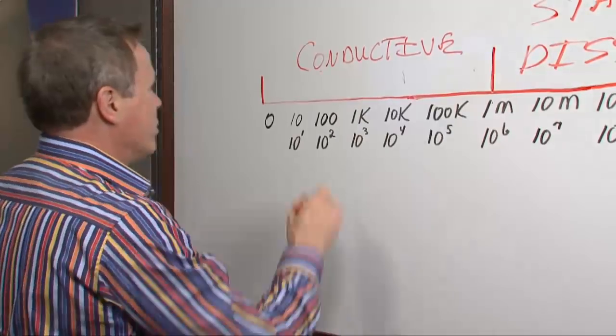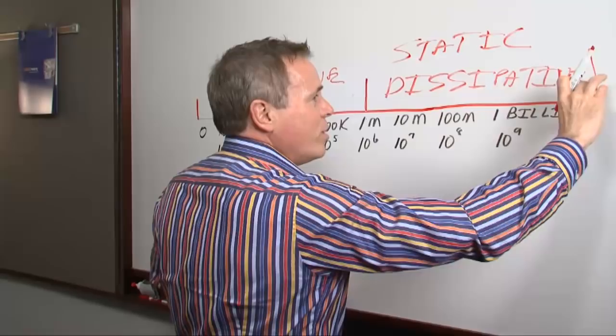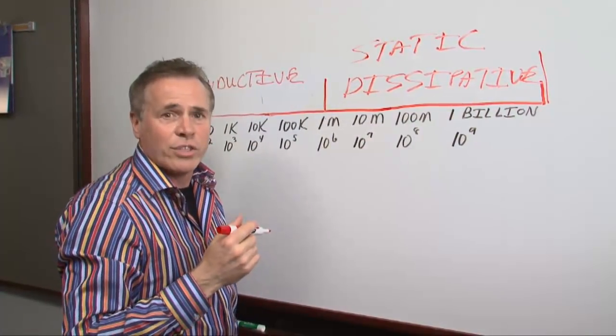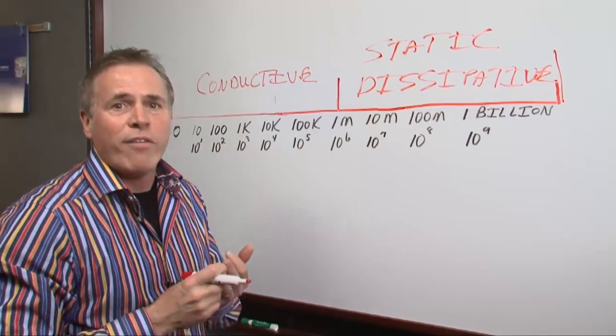Well, right now we've got two choices, something that goes all the way down to zero and something that goes all the way up to a point where it's so not conductive that it won't get rid of static electricity. So how do we know which material to use? Well, fortunately, we have other standards.